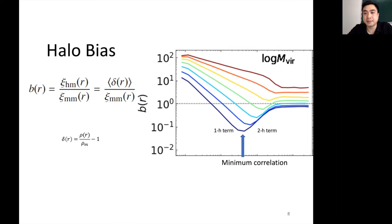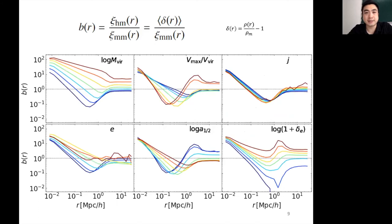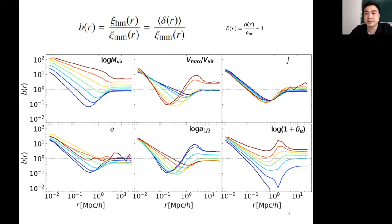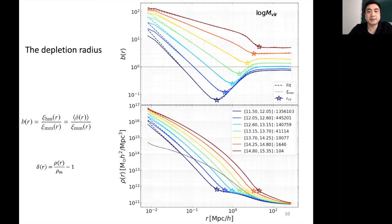We think that this minimum correlation separates the one- and two-halo terms. I can do this binning by many different halo properties, and in all of these different binning methods, all of them have this minimum correlation. This is where we define our characteristic depletion radius, where we believe the one-to-two-halo separation transition happens. I can recast the bias into densities, where these stars represent the minimum correlation location.